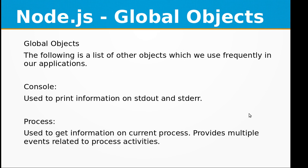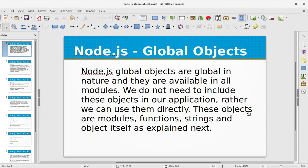Other frequently used global objects include: console, which is used to print information on stdout and stderr; and the process object, which is used to get information on the current process and provides multiple events related to process activities. That's it for this video — I hope you've learned about the global objects available in Node.js and how to use them.